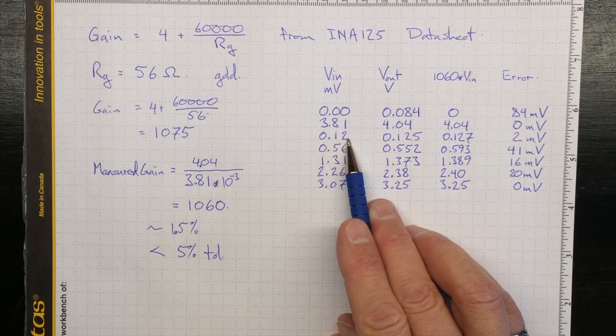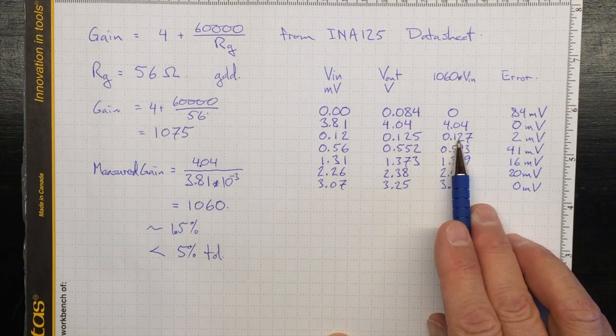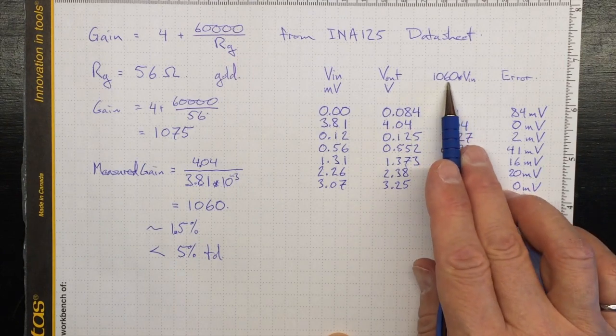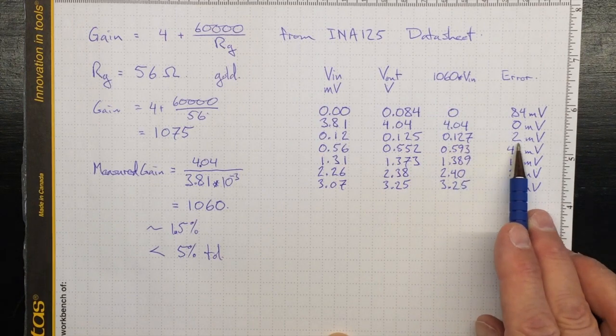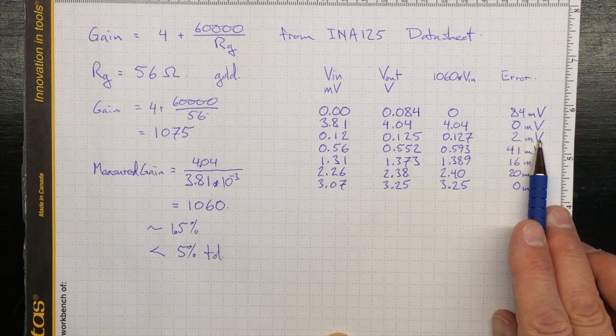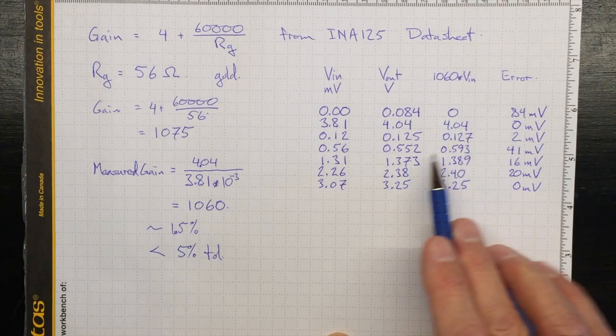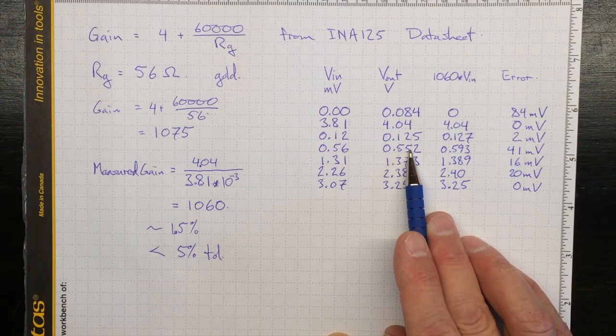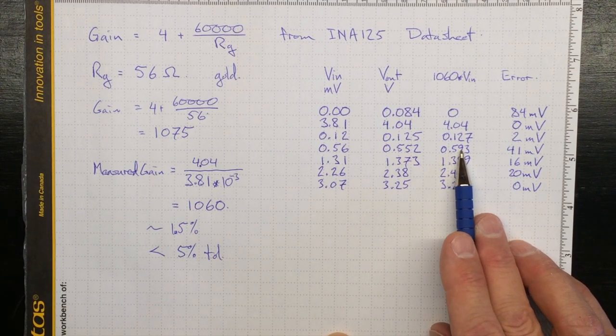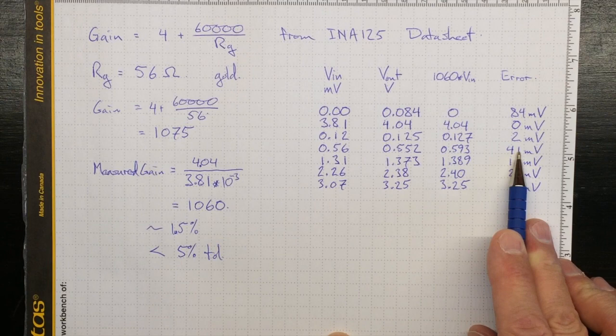0.12 millivolts, a very small voltage. 0.125 volts out. If we use our 1060 gain equation, we ought to have got 0.127 volts out. So the readings in error are by about 2 millivolts. That's within the limits of accuracy of the meter, so that's pretty good. 0.56 volts, we actually got a value lower than we would have expected. We would have expected to get 0.593. We're off by 41 millivolts. I might almost be worried that I didn't do that measurement very well.